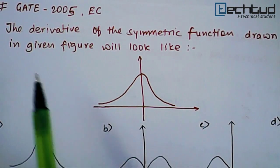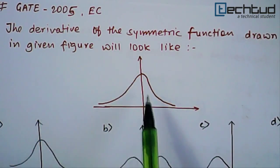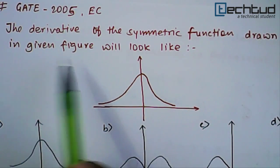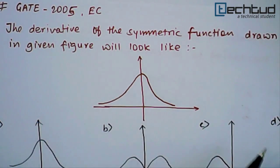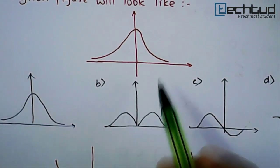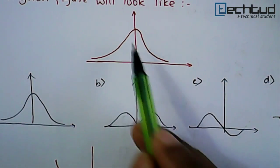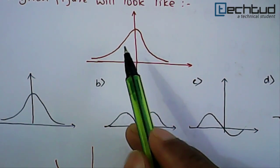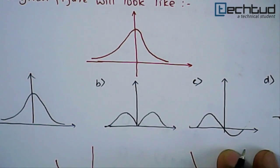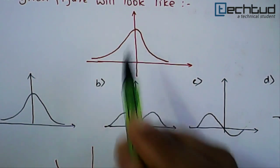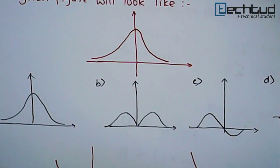The question is something like this: The derivative of the symmetric function drawn in given figure will look like. So they are asking, basically they have given this figure and they are asking that from the following which one will look like the curve of derivative of this function. This is very easy to solve and this question was asked for two marks.